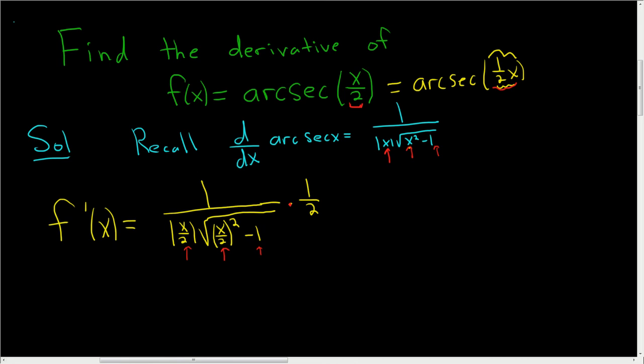I think we can clean this up. Let's keep going. This equals—let me just write the 1/2 out front. So 1/2 times 1 over—this 1/2 can come out of the absolute value. So it's just 1/2 absolute value of x. And here we have the square root. And this is x squared over 4, so it's x squared over 4 minus 1. So these cancel.